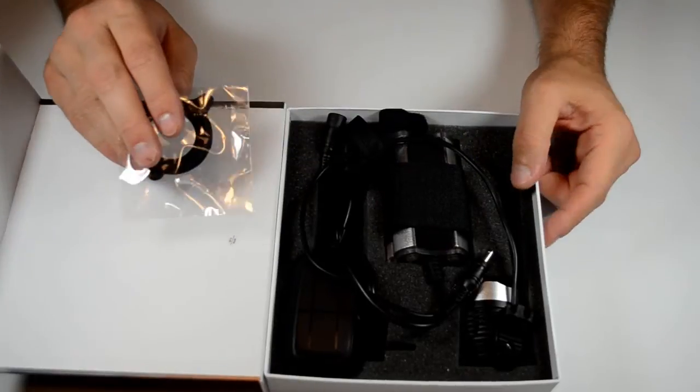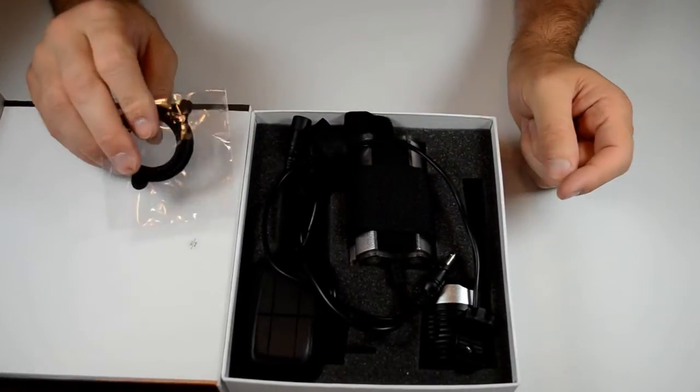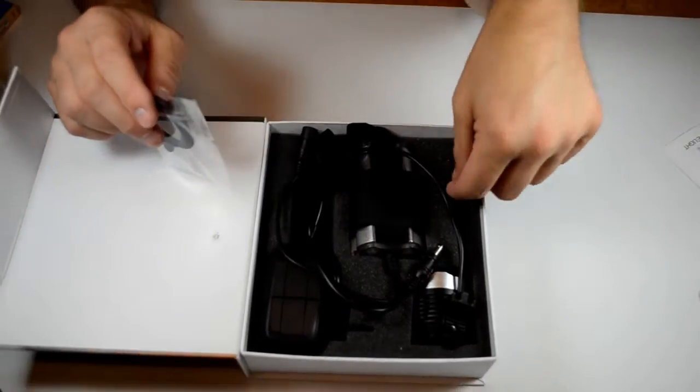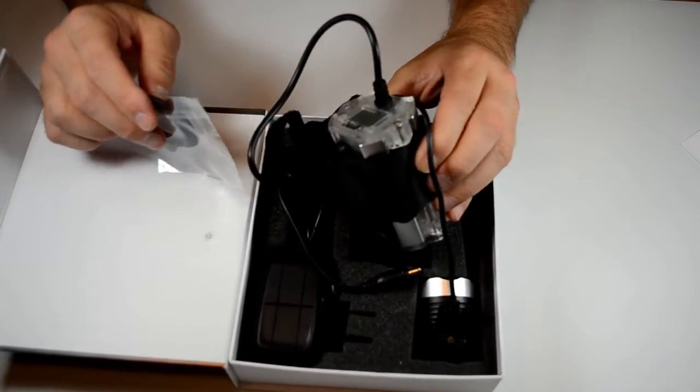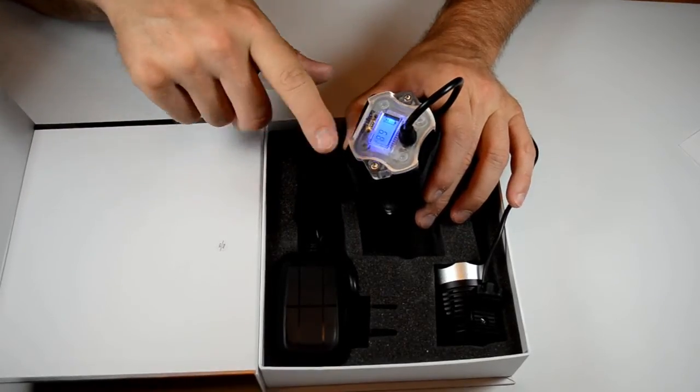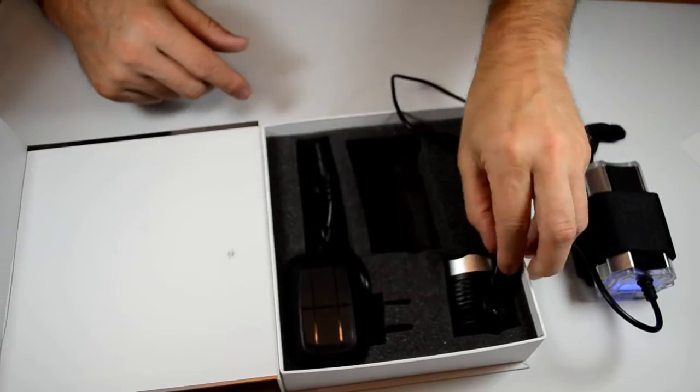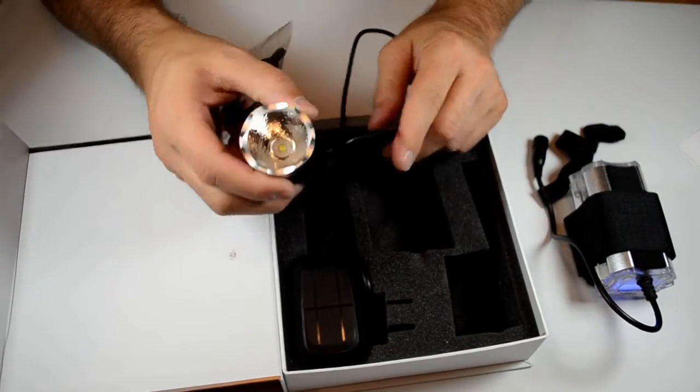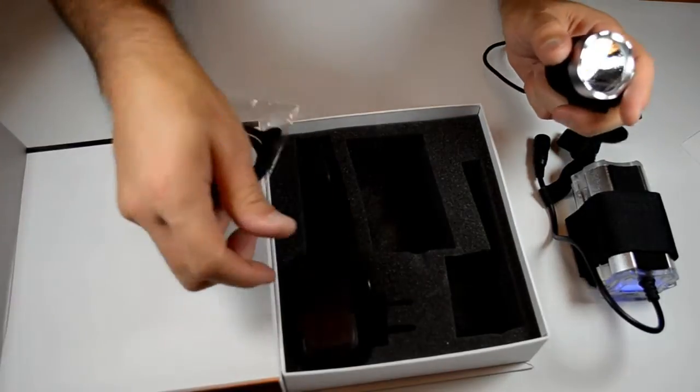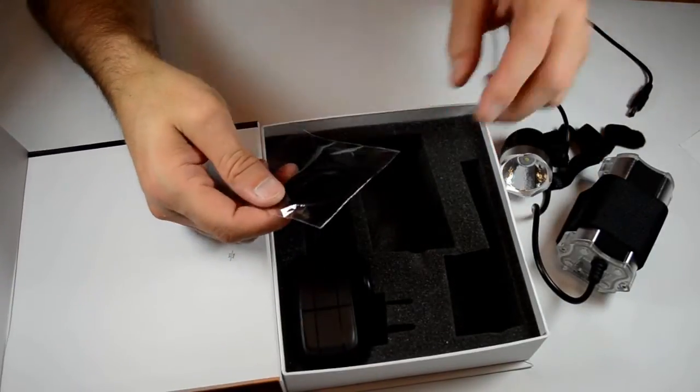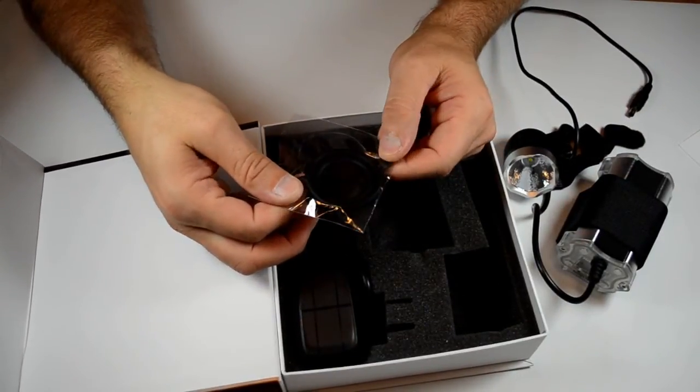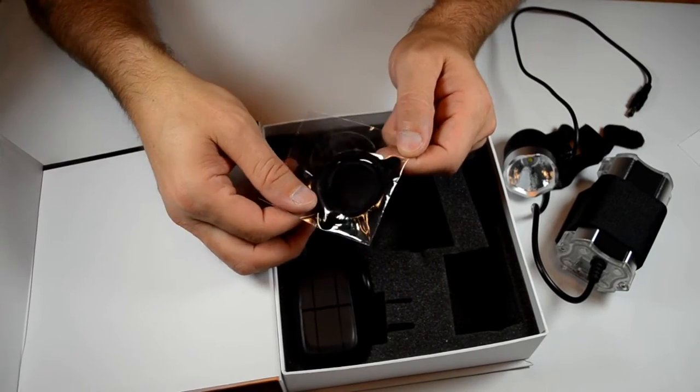Like the previous model with the four XPG R5s in it, it comes with the same battery pack. It's got the battery pack with your meter on it, the light itself, your wall charger and cord, and your O-rings that are your quick attach and detach system.